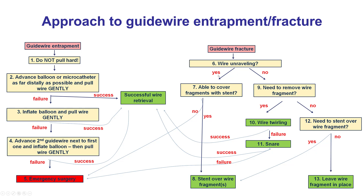For wire unraveling: if we are able to cover the fragments of the wire with a stent, then this is done. But if not, then emergency surgery may be required.